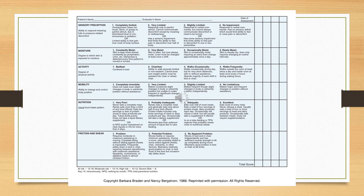The Braden scale, on page 1006 in your book, is used to determine a patient's risk of developing a pressure ulcer. It assesses sensory perception, moisture level, activity, mobility, nutrition, and friction/shearing. A score of 15–18 indicates at-risk, 13–14 is moderate risk, 10–12 is high risk, and 9 is severe risk.